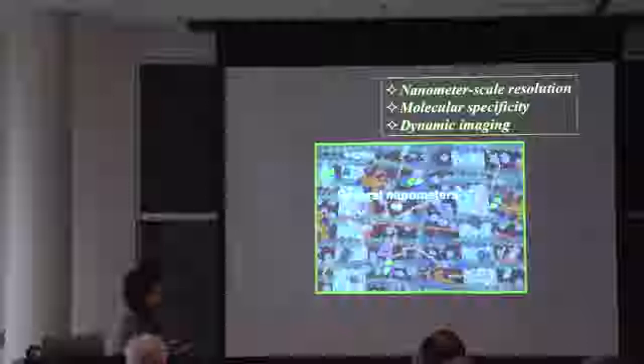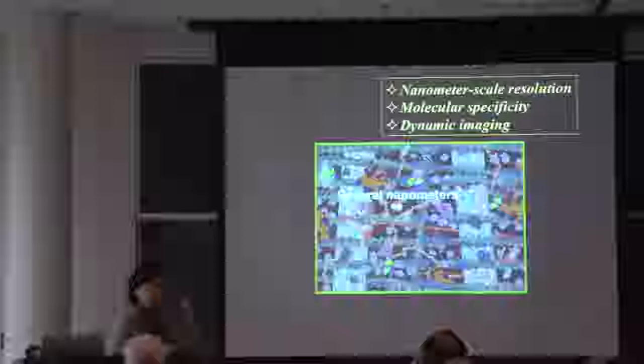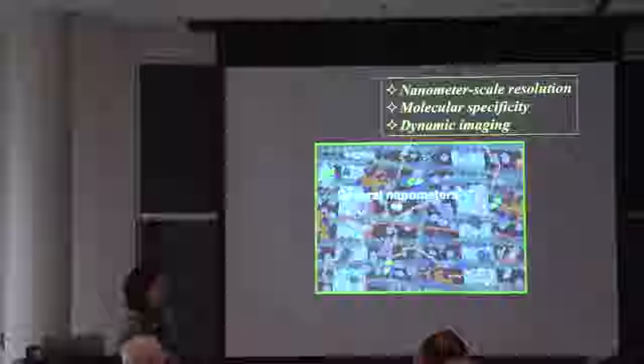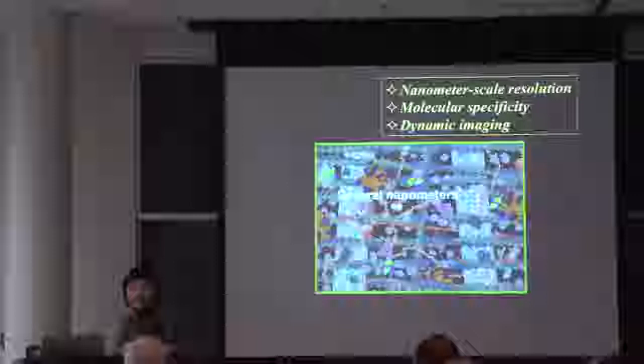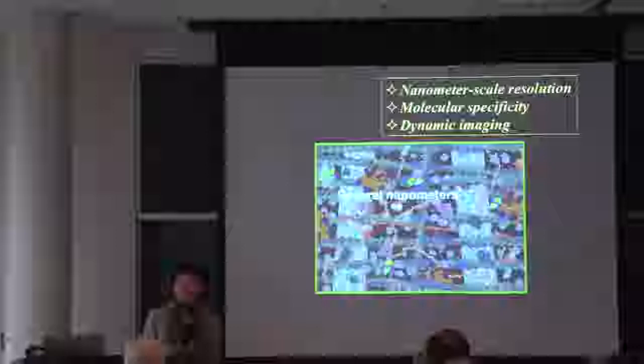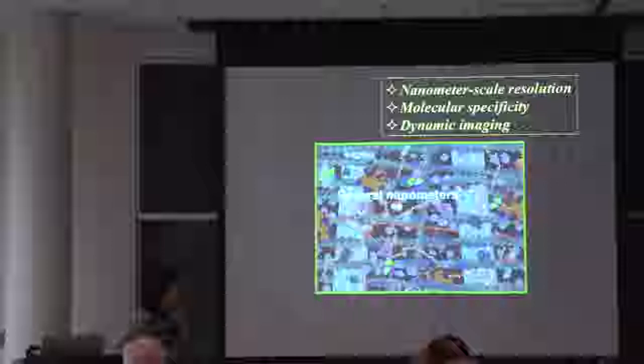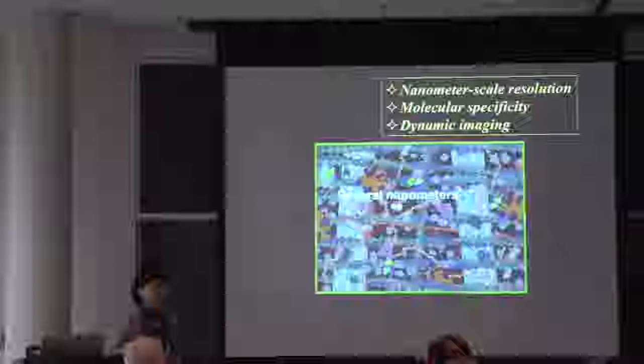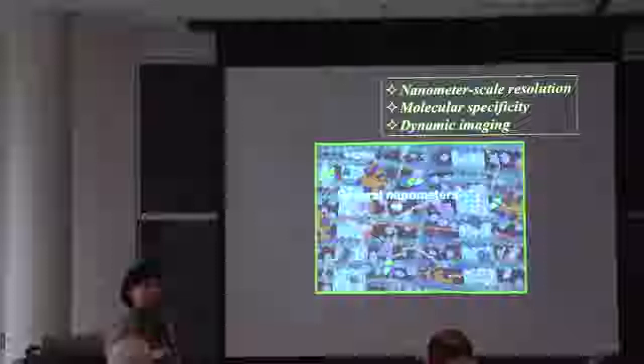We would like to understand things at the molecular level — to see how these molecules interact to give function. So we want our imaging approach to have molecular-scale resolution, meaning nanometer-scale resolution. We'd also like molecular specificity in our images, knowing which molecule is actin, which is a kinase, which is a nucleosome. And because these are living biological systems with ongoing dynamics and motions, we'd also like dynamic imaging capability.